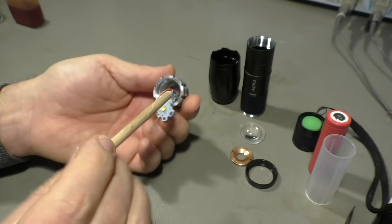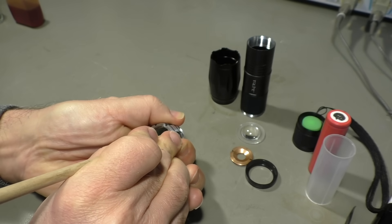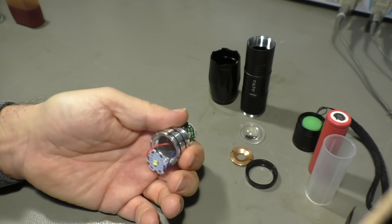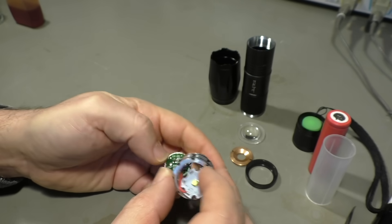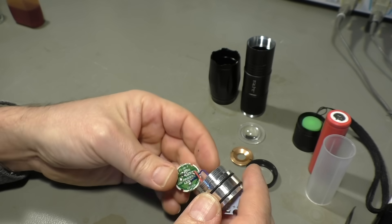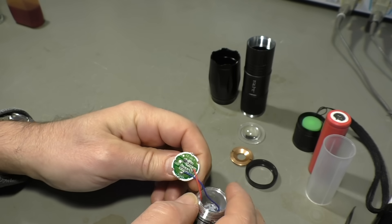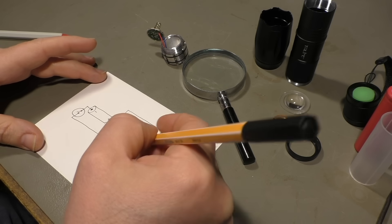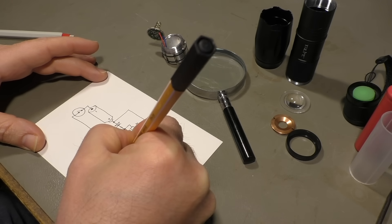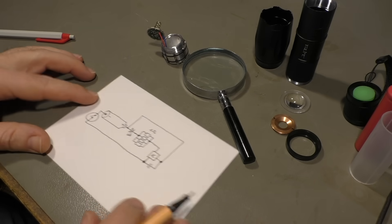So we can screw that off. That's just a hollow tube. Yep, now we get that part apart. And now there is the electronics board. Let me get that out.